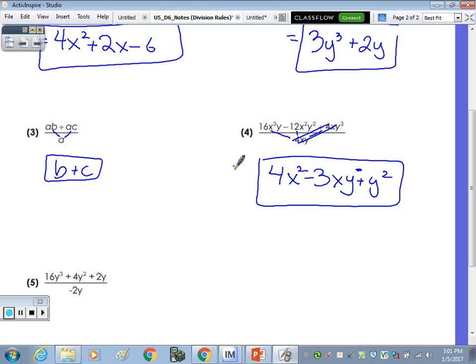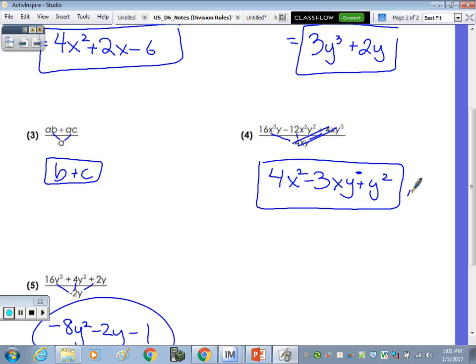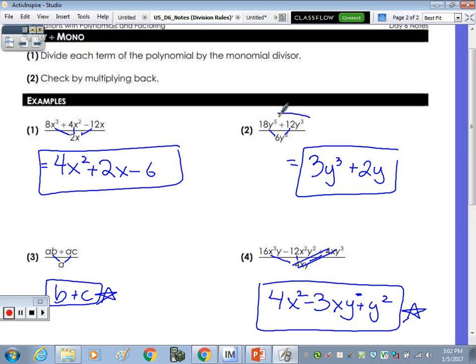Last one. 16Y cubed divided by 4Y squared plus 2Y. 16 divided by negative 2 is negative 8. 4Y squared divided by 2Y is 2Y. And then at the end, negative 1. The 2 and the Y would cancel out. Now look, we had 3 terms divided by 1 term, our answer was 3 terms. 2 terms divided by 1 term, our answer is 2 terms. Is it always the case where the number of terms that you have in your numerator is the number of terms you have in your answer? Yes. Always.